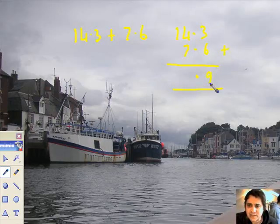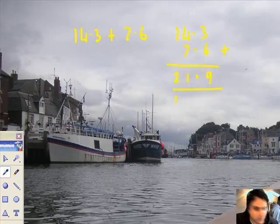So put the points straight down where you're about to put your answer and just add as normal. 3 and 6 becomes 9, 4 and 7 becomes 11, 1 plus 1 is 2, so 21.9.